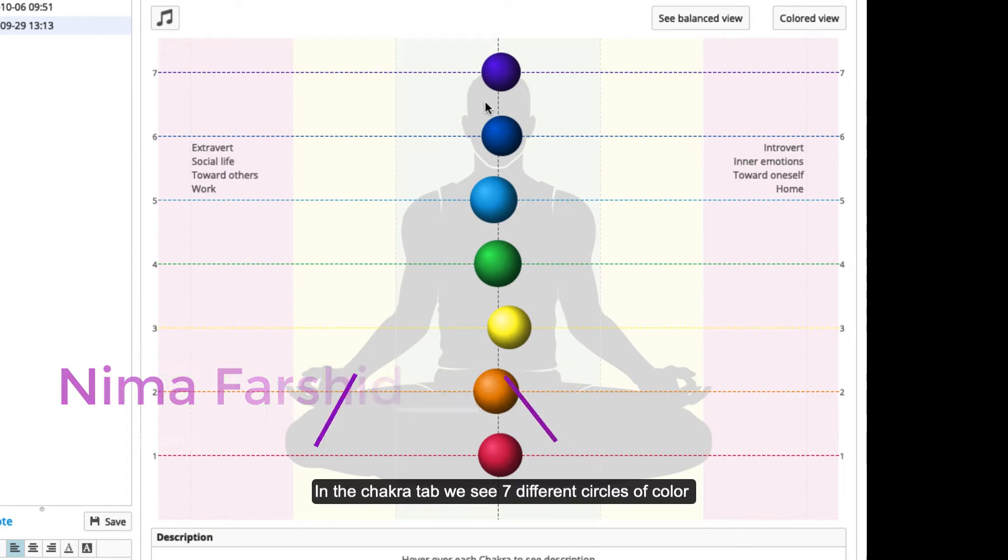In the chakra tab we see seven different circles of color which are the major energy centers in the energetic body.